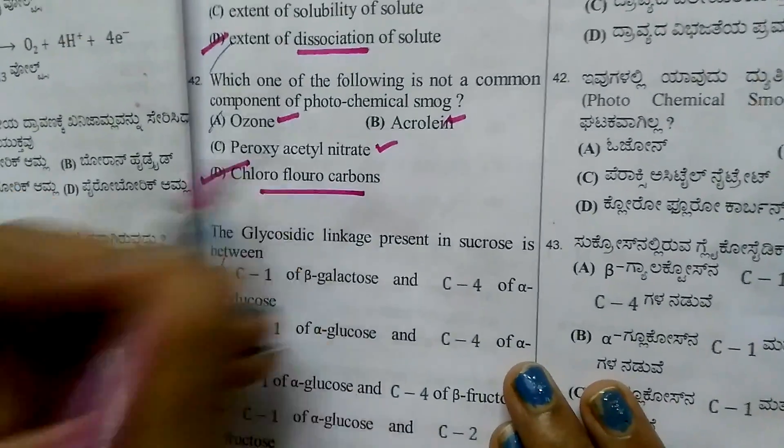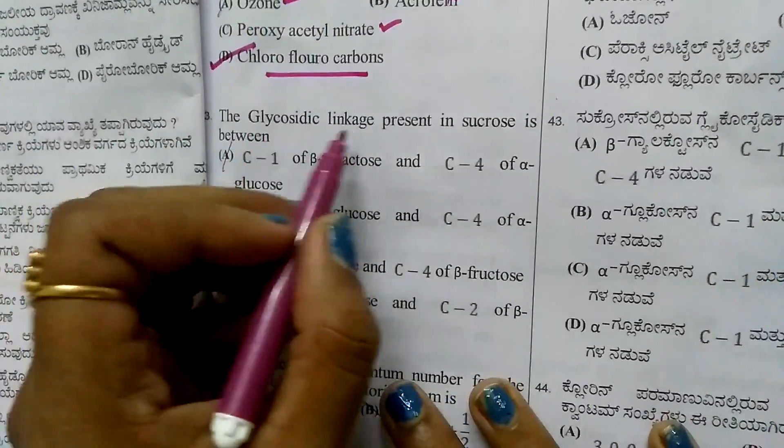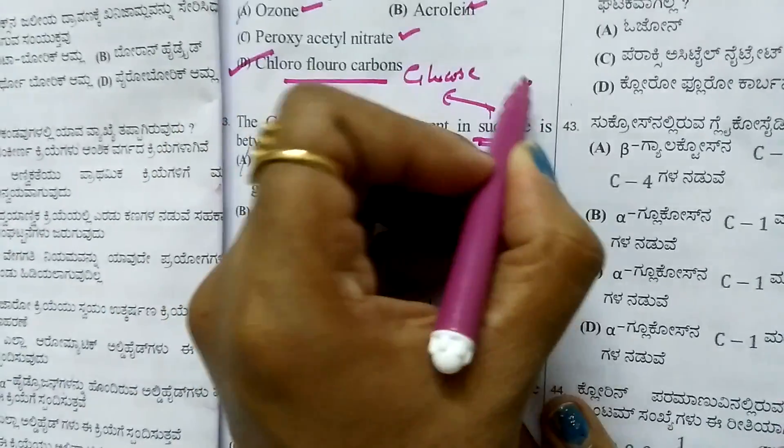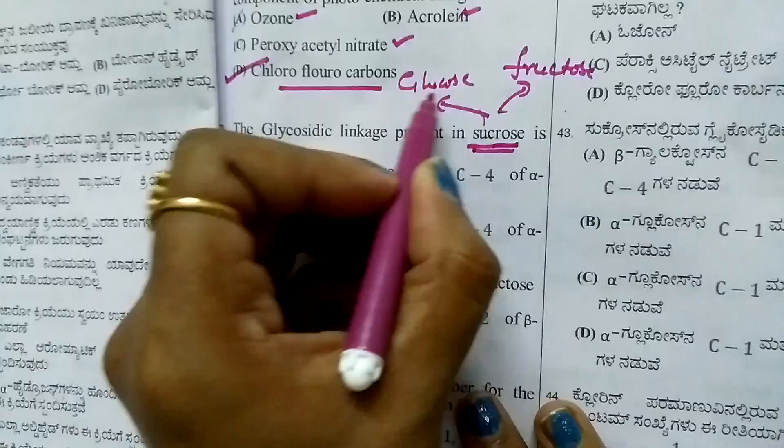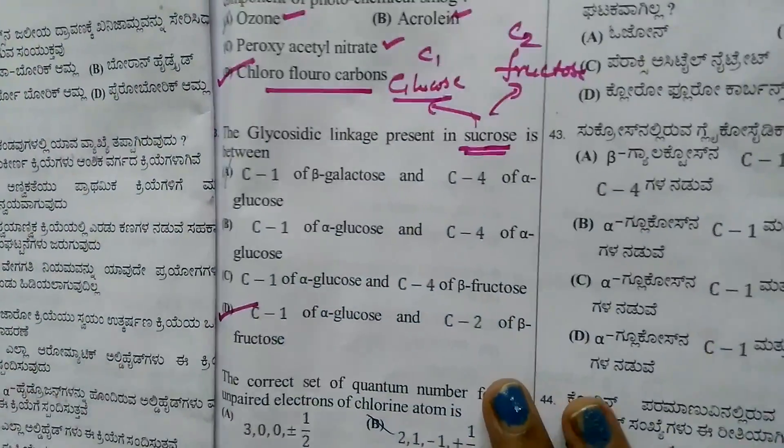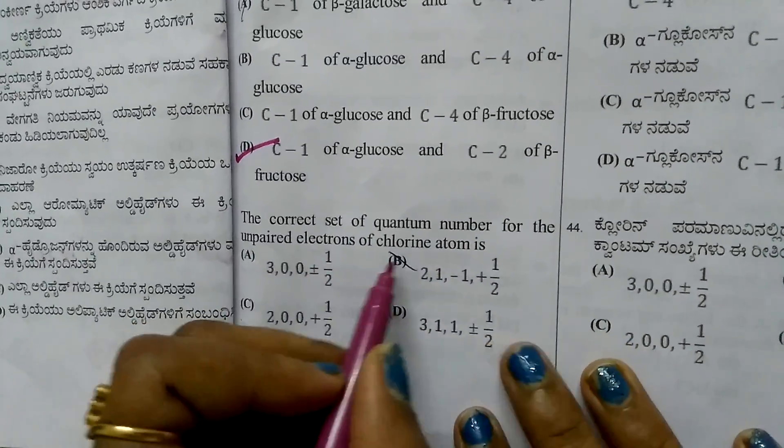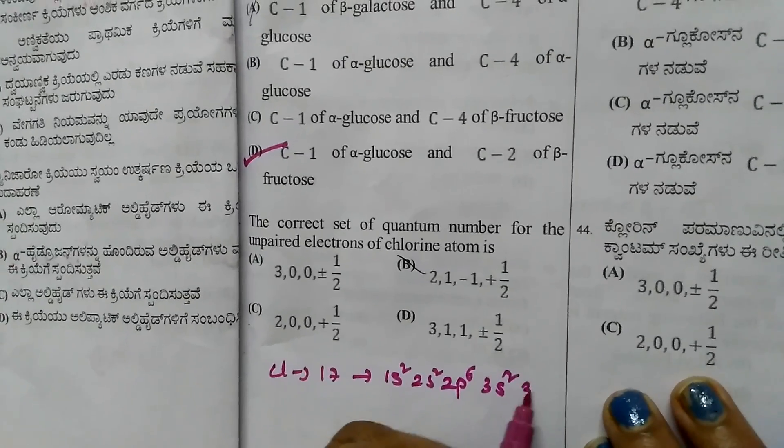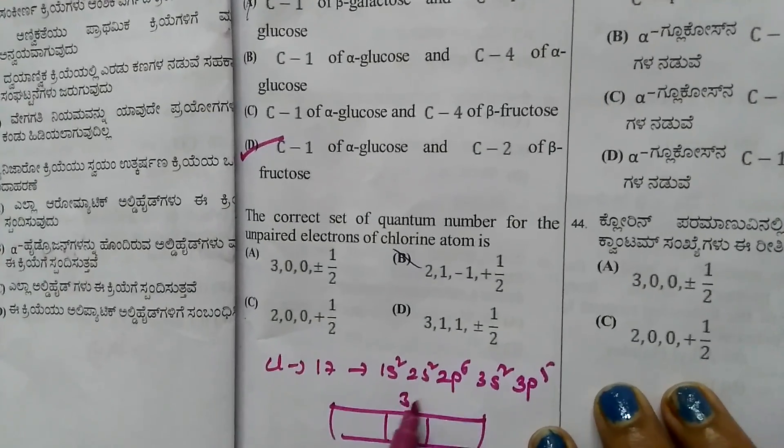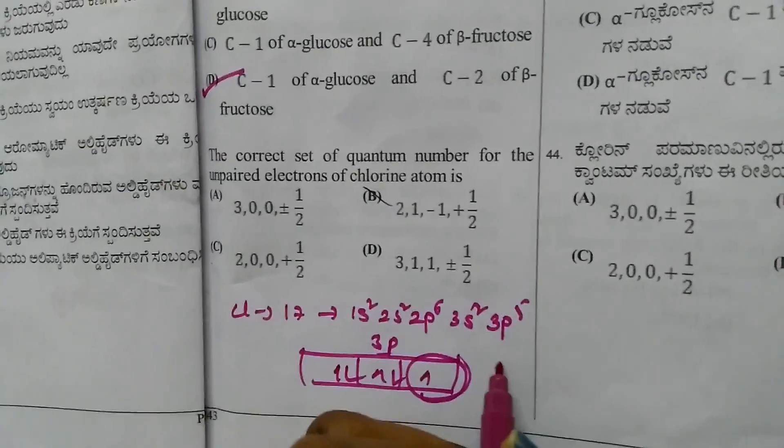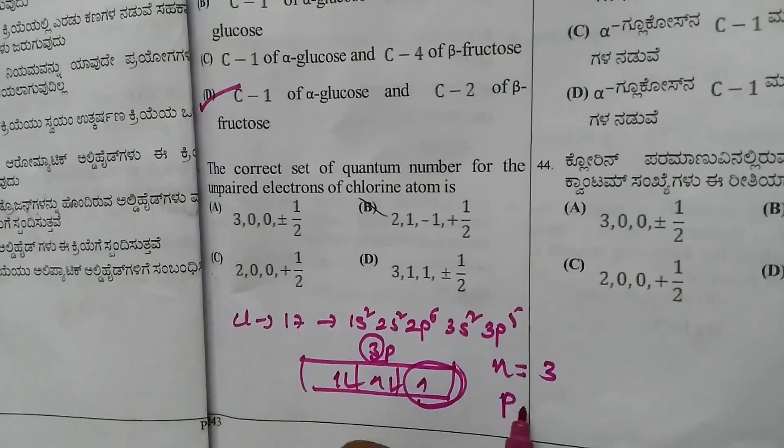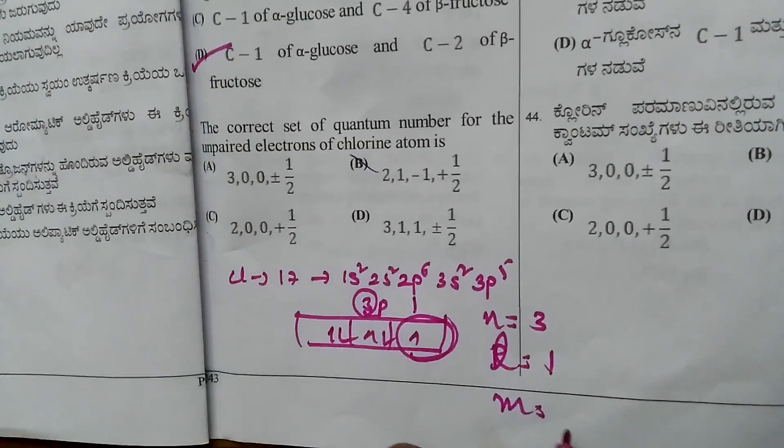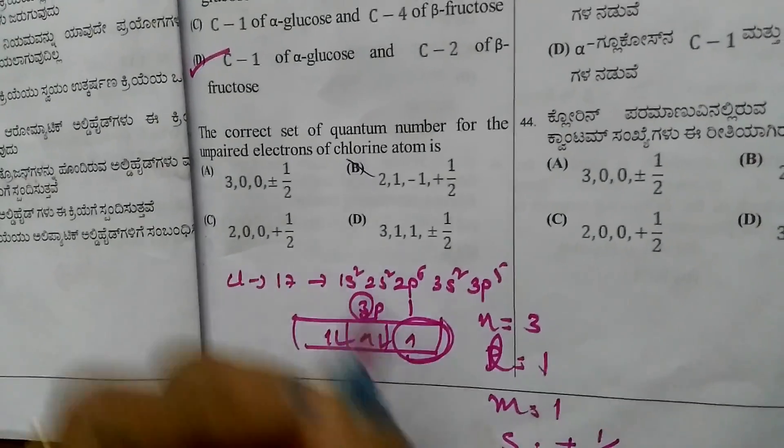Question 42: Glycosidic linkage in sucrose. Sucrose is a disaccharide composed of glucose and fructose. The linkage is between C1 of glucose and C2 of fructose, so fourth option. Question 43: Quantum numbers for unpaired electron of chlorine. Chlorine atomic number 17, configuration 1s2 2s2 2p6 3s2 3p5. In 3p5, one unpaired electron with n=3, l=1 for p orbital. m value is ±1, spin ±1/2, so fourth option.